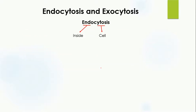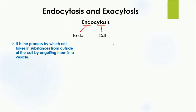Now let's study each process. The word 'endocytosis' is made up of two words: 'endo' and 'cytosis.' Endo means inside or in the cell, while cytosis means cell. So endocytosis means inside the cell. It is the process by which a cell takes in substances from outside by engulfing them in a vesicle.